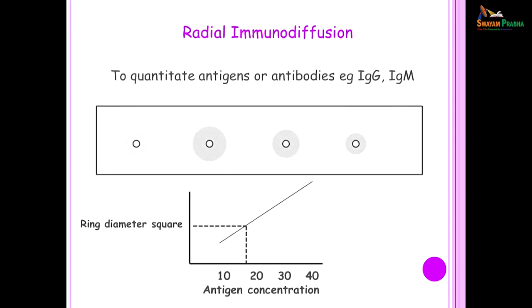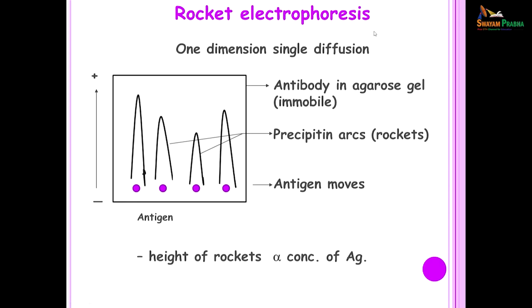Radial immunodiffusion gives results within 24 to 48 hours. If you want to hasten this, we do what is known as rocket electrophoresis. Here you take a gel in which you have incorporated antibody, punch wells, and in the first three wells you put known antigen at different dilutions, and in the fourth you put the test sample. You pass a current, and the height of the rocket shape is proportionate to the concentration of the antigen. You draw a graph using the three known heights and from the graph read off the concentration of your unknown sample. This takes about half an hour to one hour.